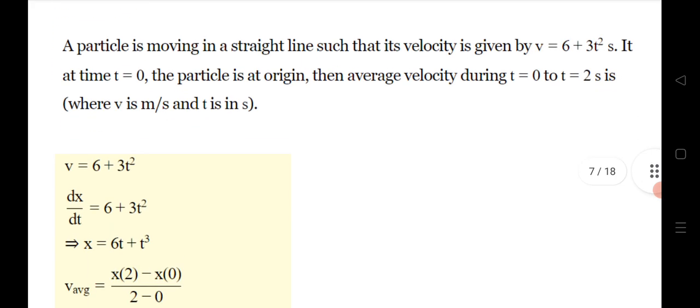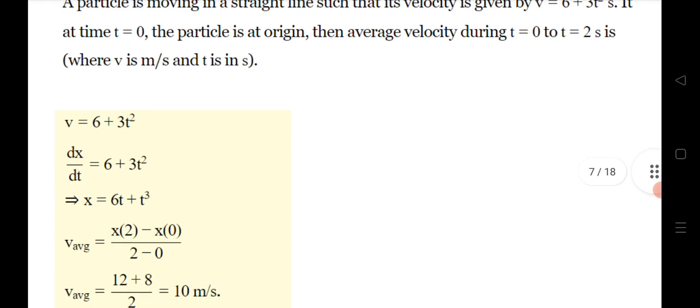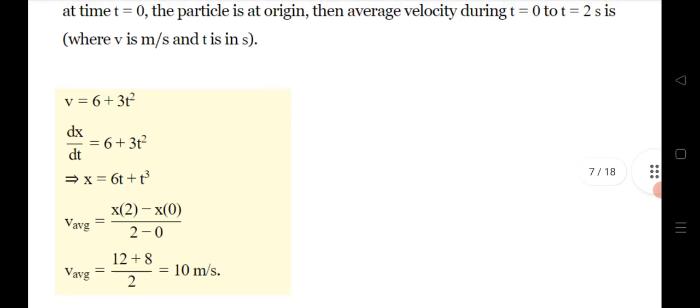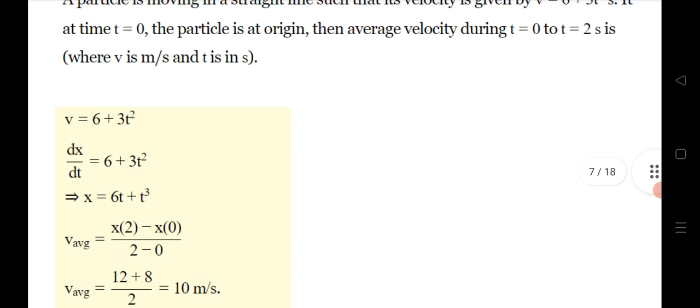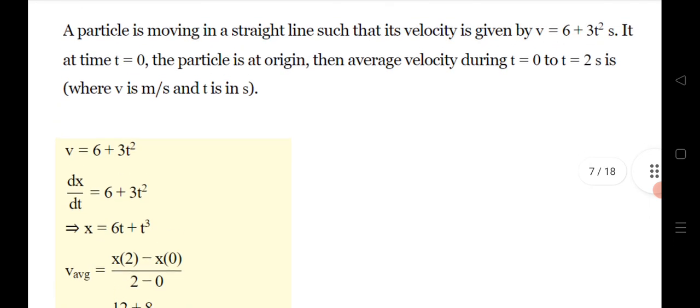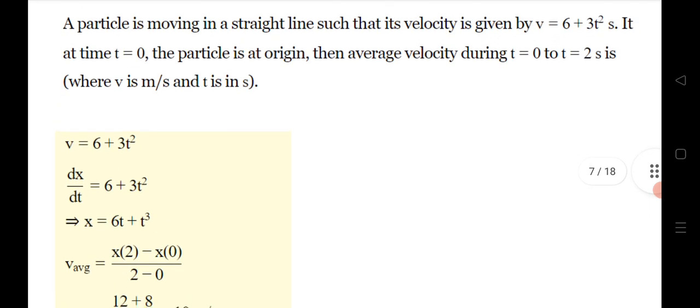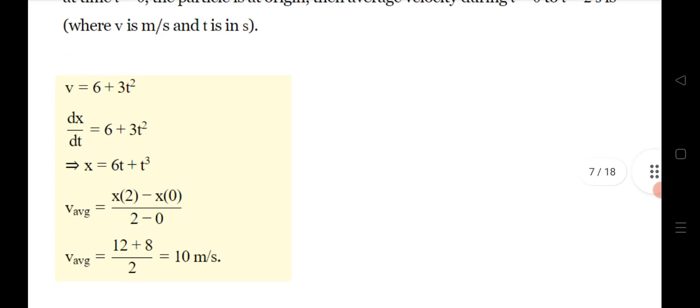Question 8: a particle is moving in a straight line such that its velocity is given as a function of time. Find the average velocity. Using the formula for average velocity — (x₂ - x₁)/(t₂ - t₁) — since velocity is given, integrate it to find position, then substitute into the formula to get the answer.